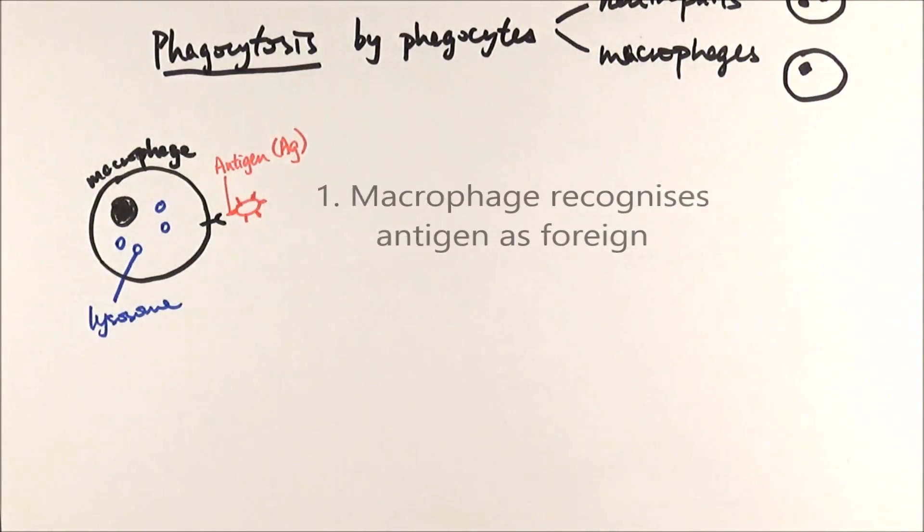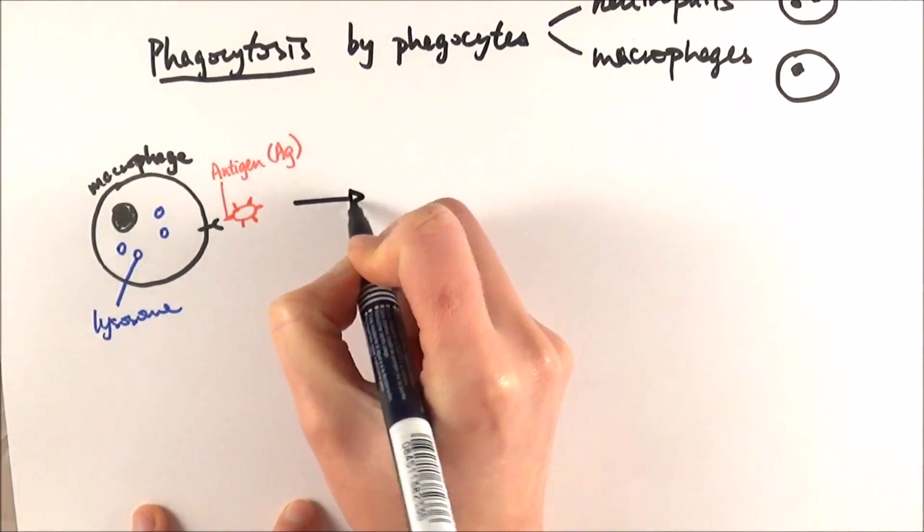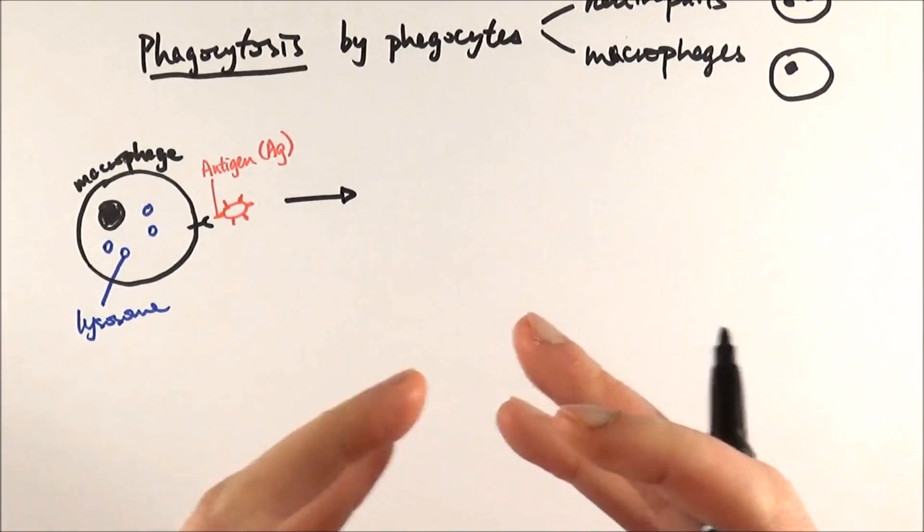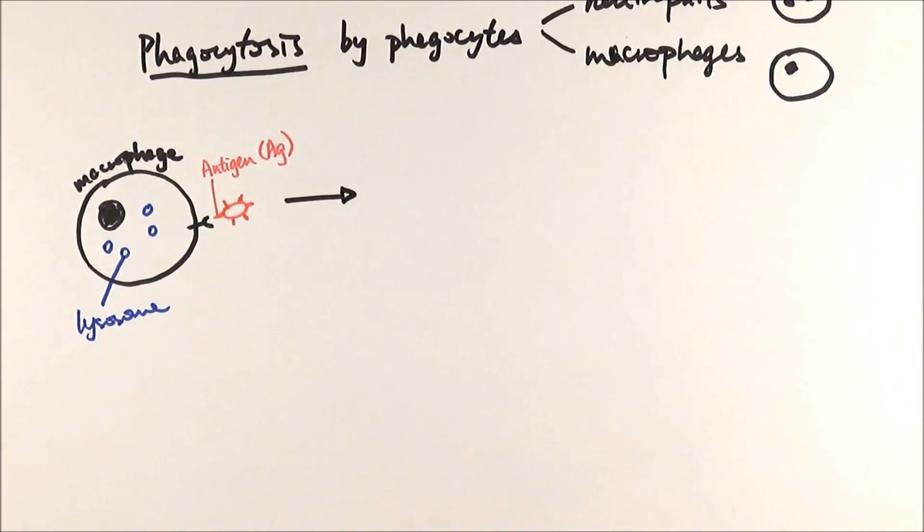So in the first step, the macrophage has a receptor which recognises the foreign antigen. And then, it will proceed to chase after it and engulf it. Engulf is a technical term that you do need to know. It basically means wrapping around and eating it, but it's definitely better to use the word engulf in exams.